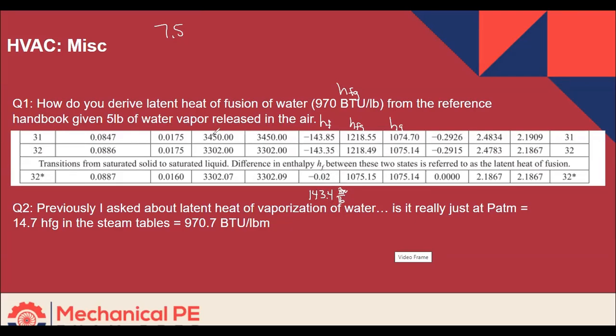And then the second question, previously I asked about latent heat of vaporization of water. Is it really just P atm at 14.7 and then look up HFG in steam tables and it's 970. Yes. That is HFG. That is the latent heat of vaporization for steam at atmospheric pressure.